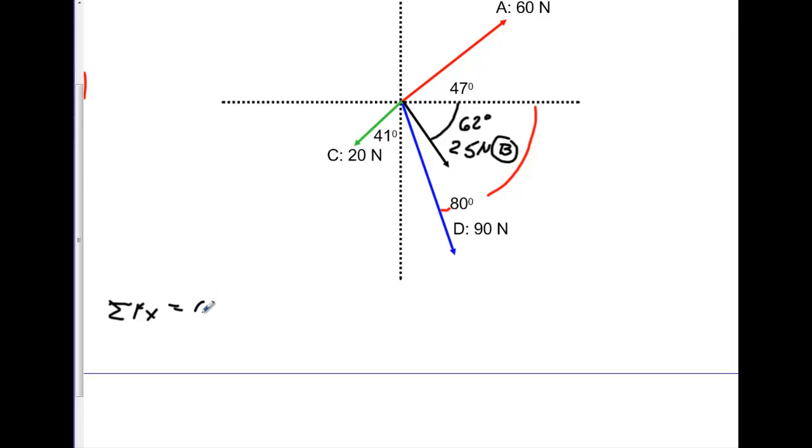We're going to sum up the forces in the x-direction first. And we'll start with A. So again, A is going to be 60 times the cosine of 47 degrees. And then plus B and B is going down. So it's going to have a positive x value. So it'd be plus 25 times the cosine of 62 degrees.